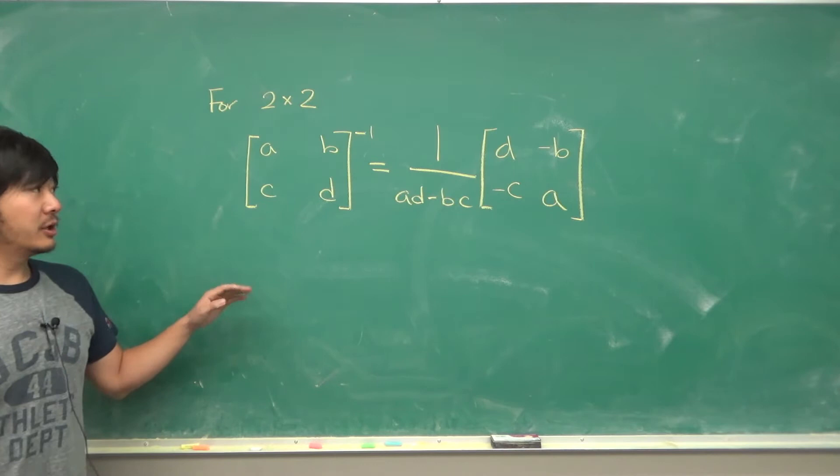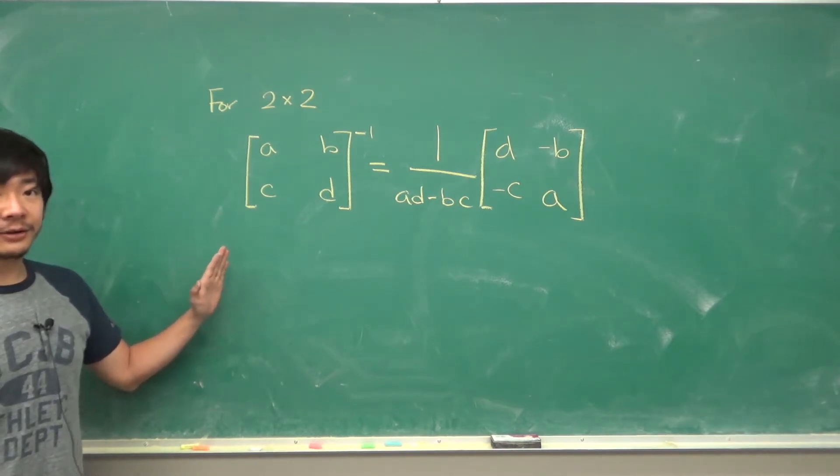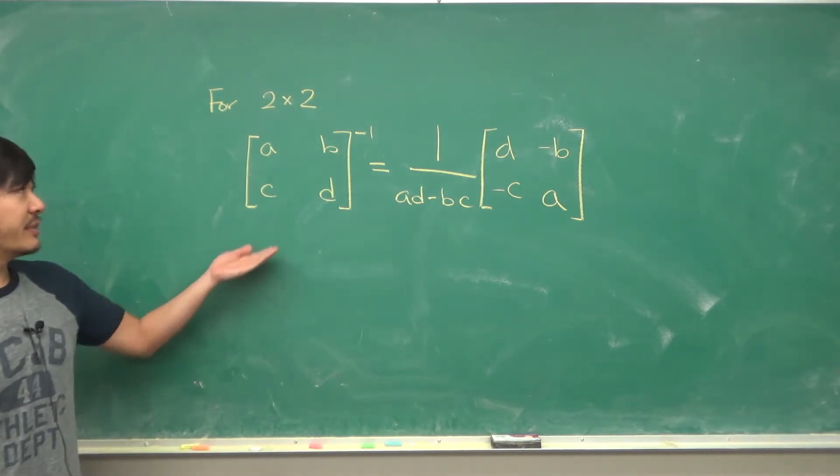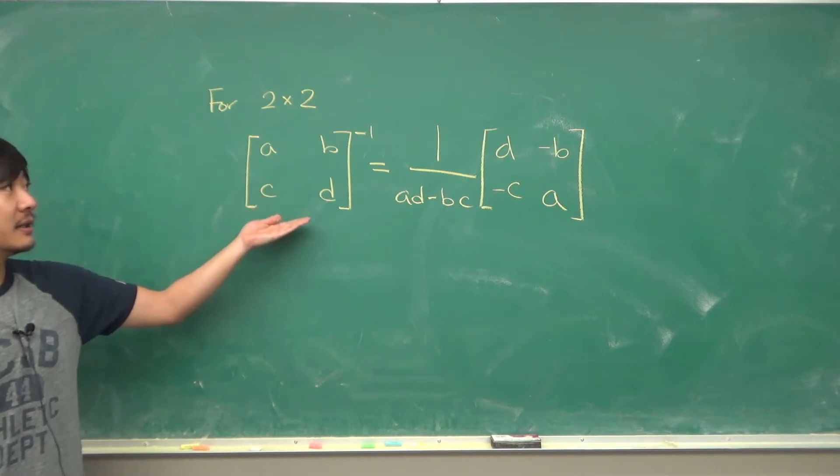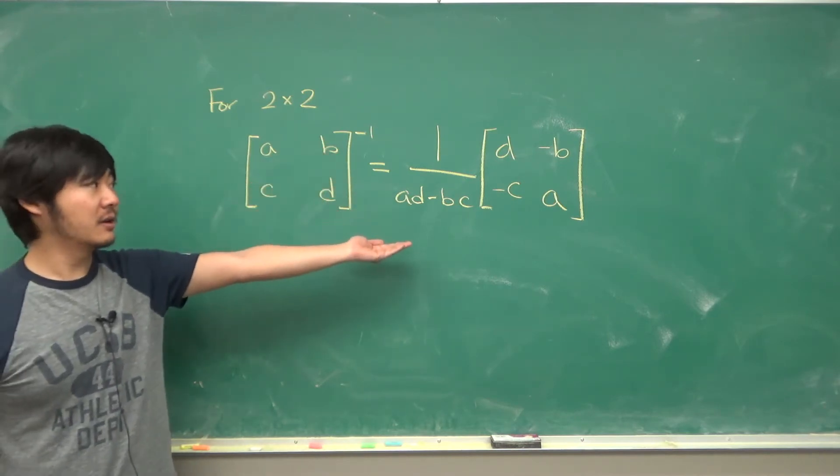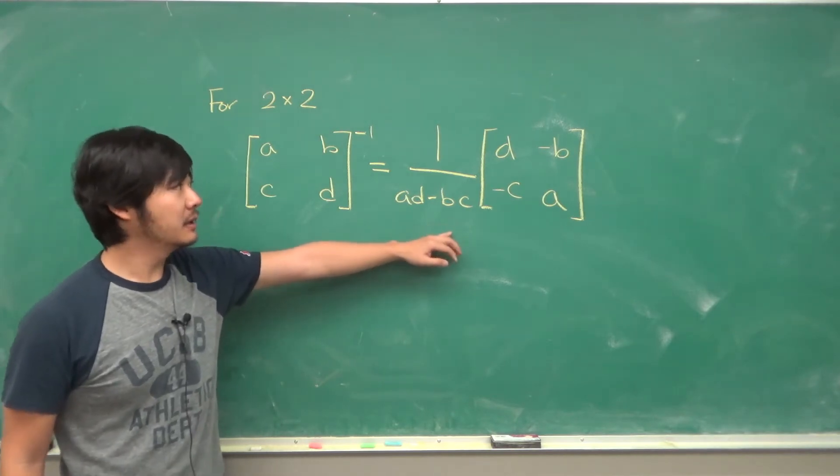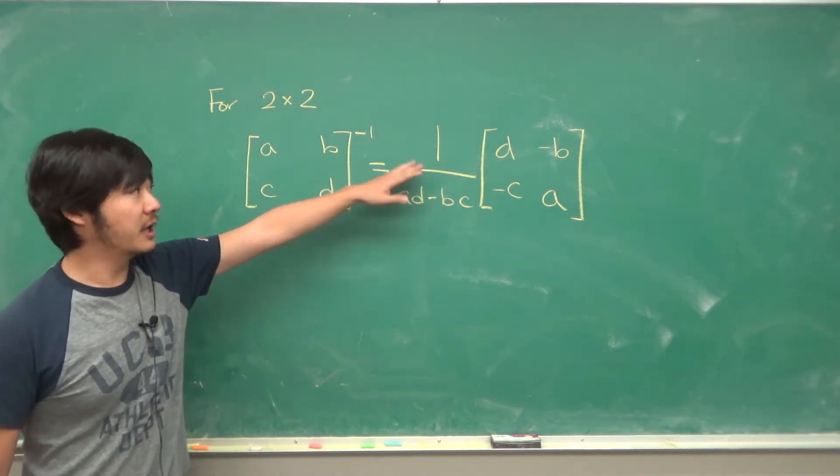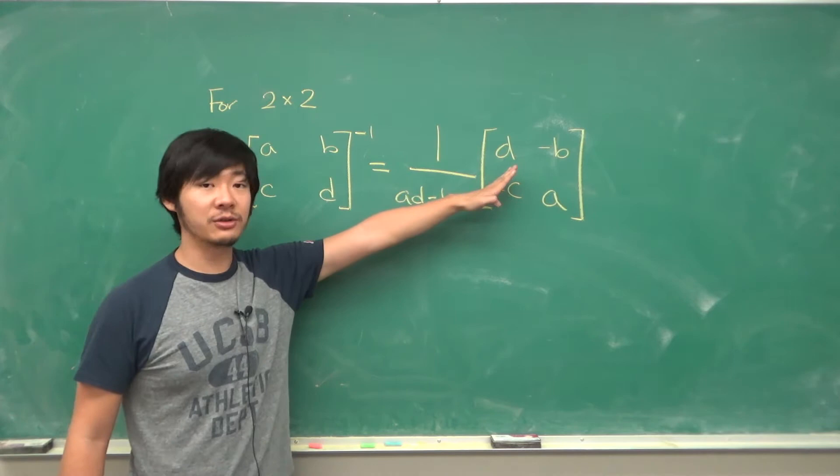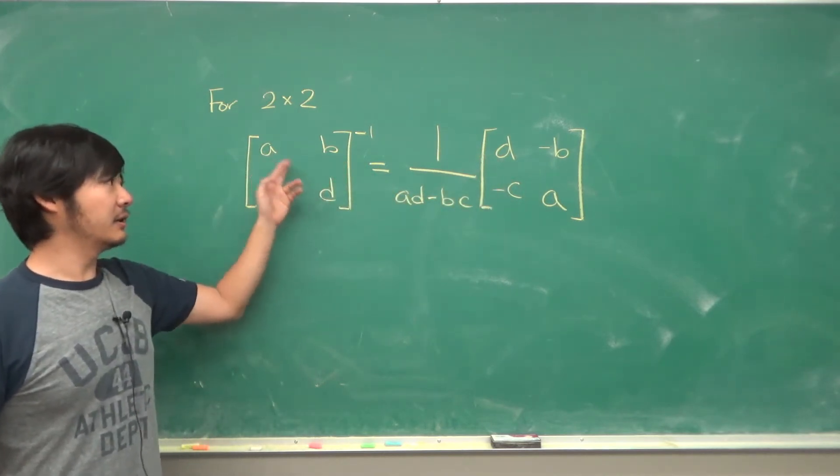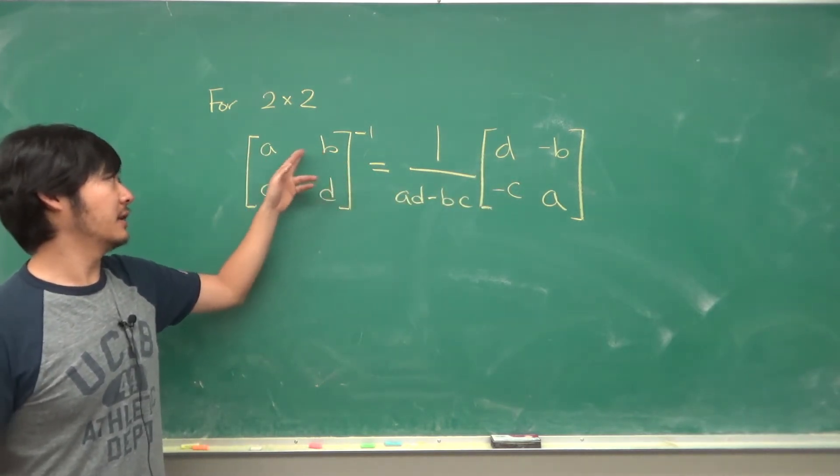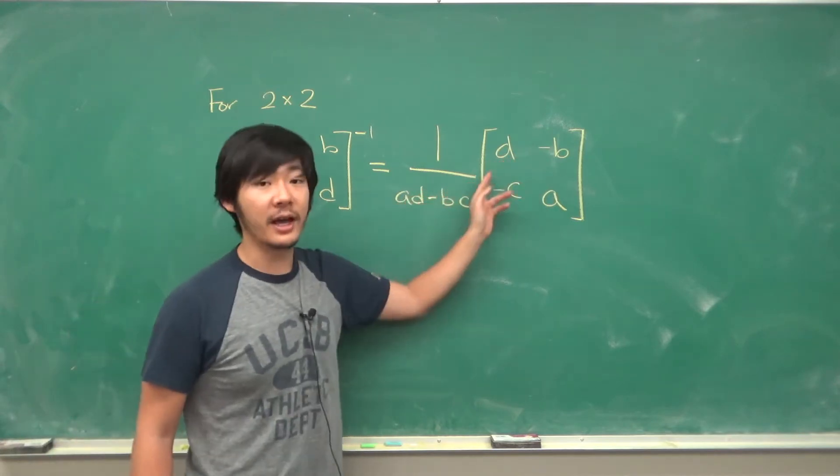For a 2 by 2 matrix we have a formula for the inverse. So this 2 by 2 matrix ABCD, its inverse is given by 1 over AD minus BC. This is just a number times the matrix where the diagonals are switched and the negative signs are on the off diagonals.